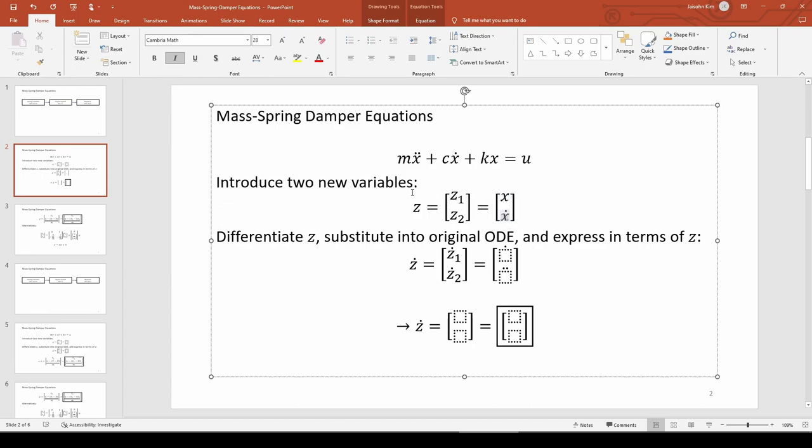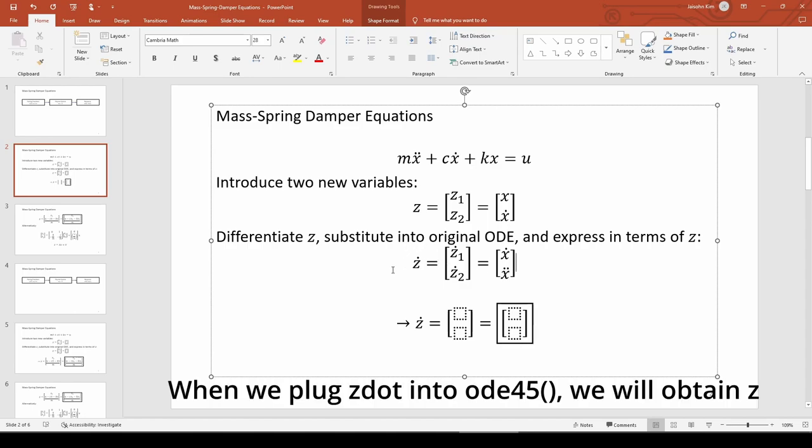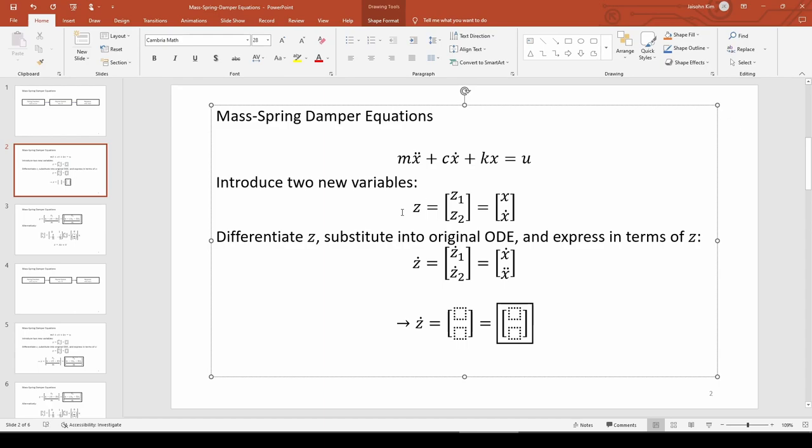The next step is to differentiate z. When we do so, the x becomes x dot, and this x dot becomes x double dot. The z dot vector represents the system of first order ODEs we will plug into ODE45 to get the z vector. But we're not done just yet.